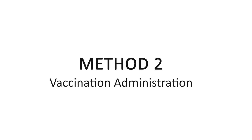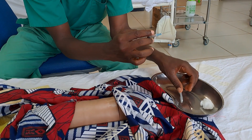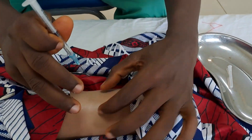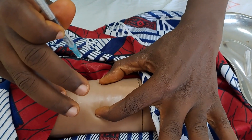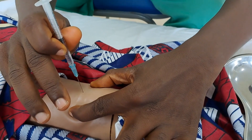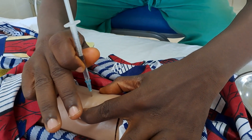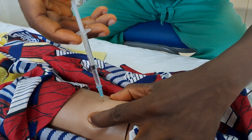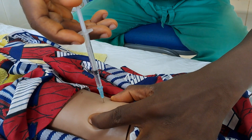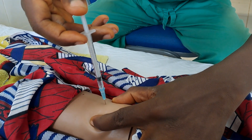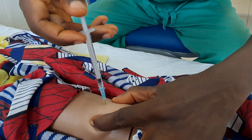Method two: for vaccination administration. With the non-dominant hand, stretch the skin at the injection site with your thumb and forefinger. Do not touch the injection site. With the dominant hand, hold the needle at an angle of 90 degrees. Inform the patient, then quickly insert the needle using a dart-like motion into the skin.